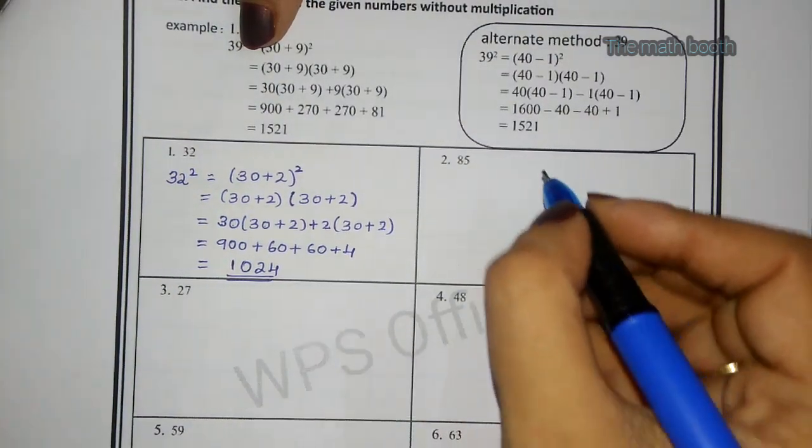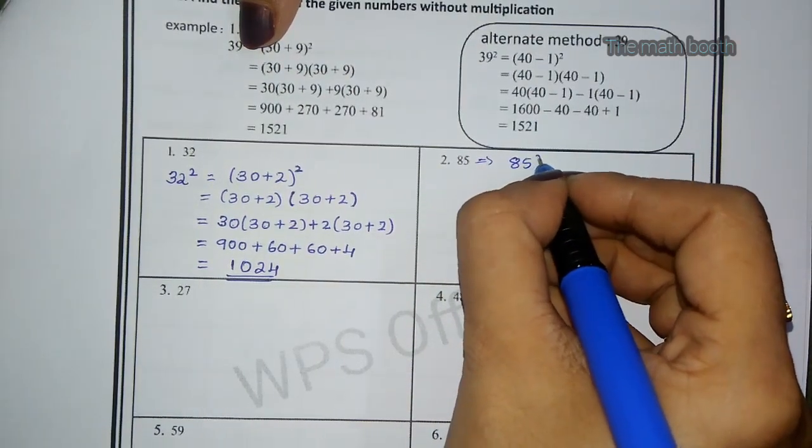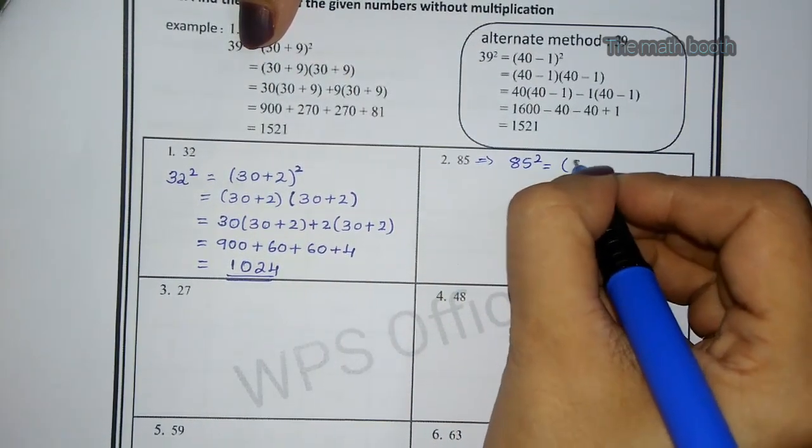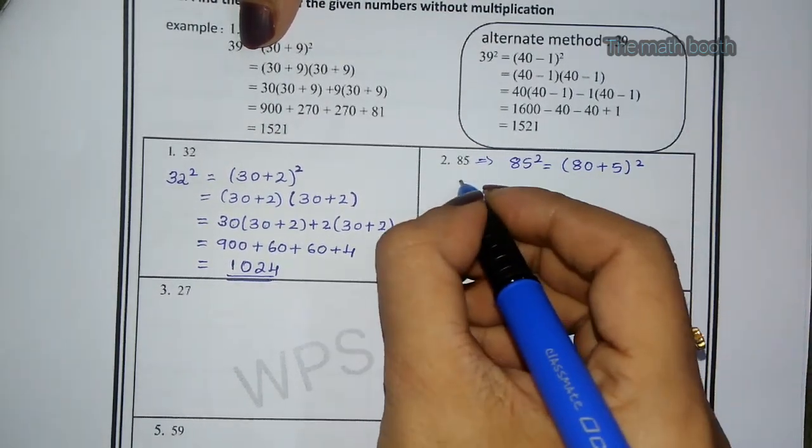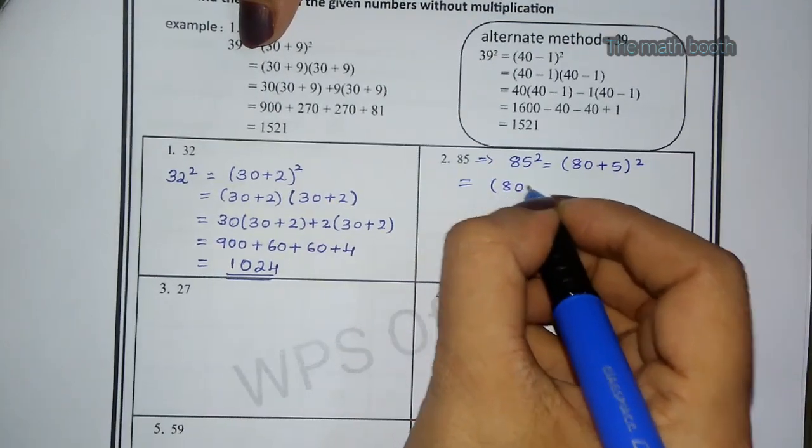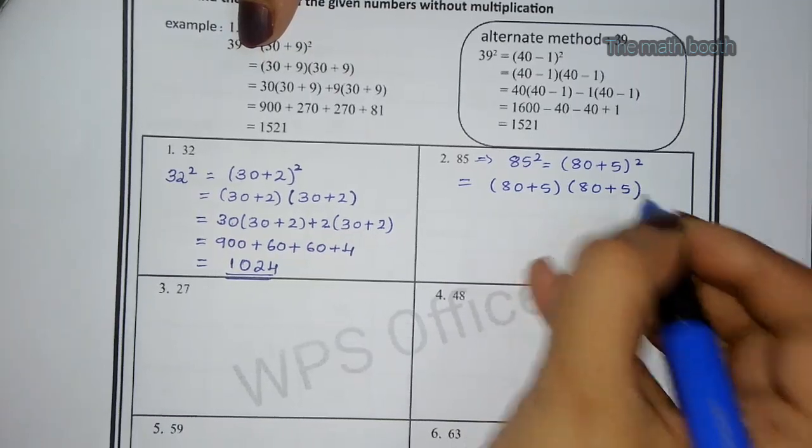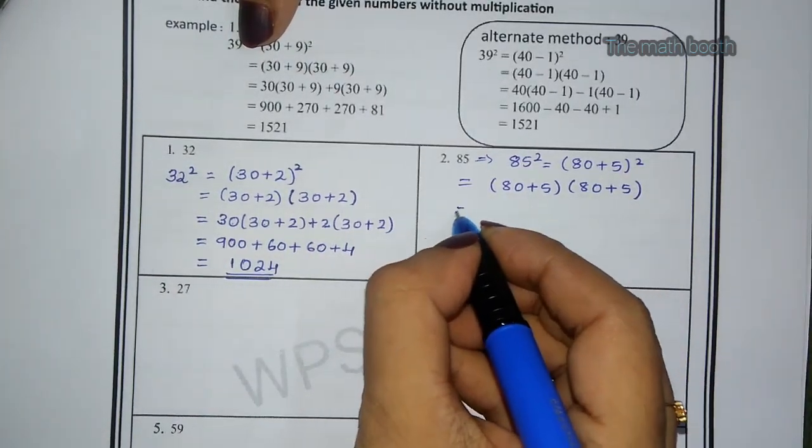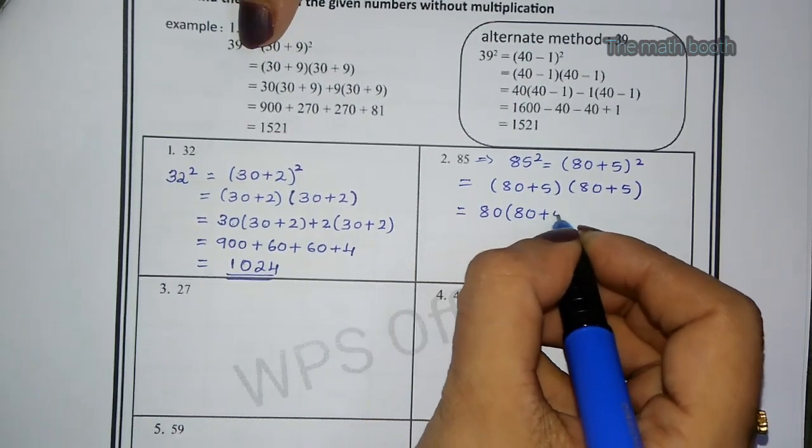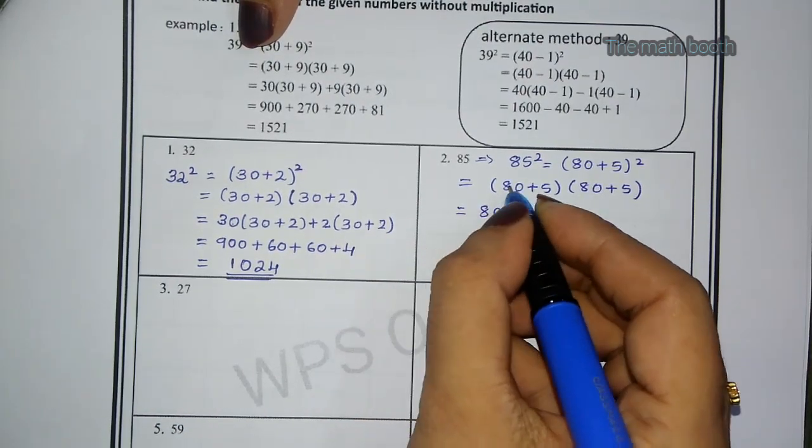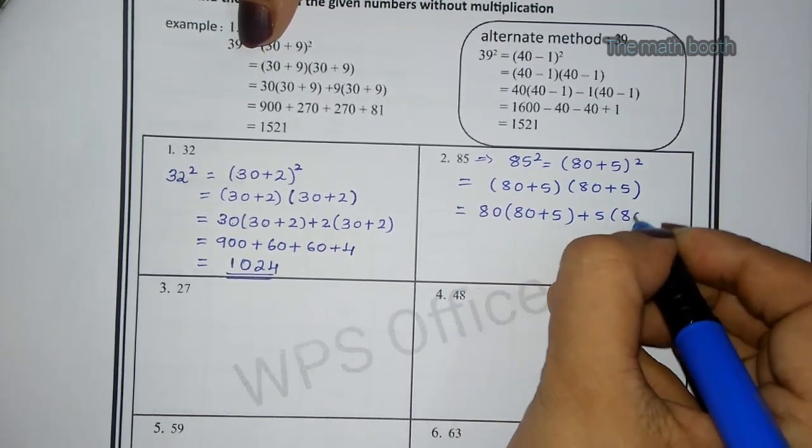So here let us see second one. Let us do 85 square. What we can do? (80 + 5) square. Now let us write this two times. (80 + 5)(80 + 5), two times we have to write. Then what we have to do? One bracket we will open, 80, and we will write one bracket as it is. If we have written 80 outside, what is remaining? Plus 5, (80 + 5).